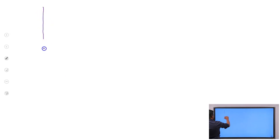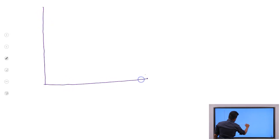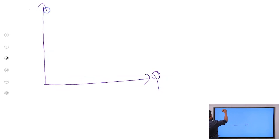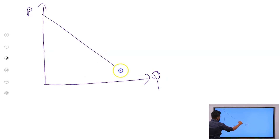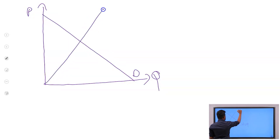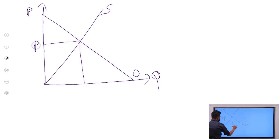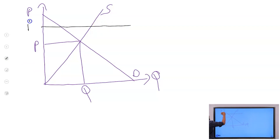Now we are going to explain this through a graph. I am taking an example of a minimum price imposing situation where the government is going to purchase the excess supply. I am taking two axes — this is Q, this is P. This is my demand curve, this is my supply curve. This is the equilibrium price and equilibrium quantity. Now government is going to impose a price floor at above the equilibrium price, P1.